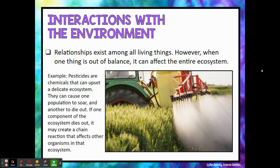Throughout this unit, the focus is going to be on relationships within ecosystems, and we're going to see that relationships exist among all living things. When one thing in the ecosystem is out of balance, it can affect the entire ecosystem, even to the point of a trophic cascade, which we'll talk about in a future lesson. Pesticides are chemicals that can really disrupt a delicate ecosystem — they can cause one population to soar and another to die out. Even if that population that dies out is a nuisance, it wreaks havoc on the ecosystem, creating a chain reaction that affects the other organisms, sometimes to the detriment of the entire ecosystem.